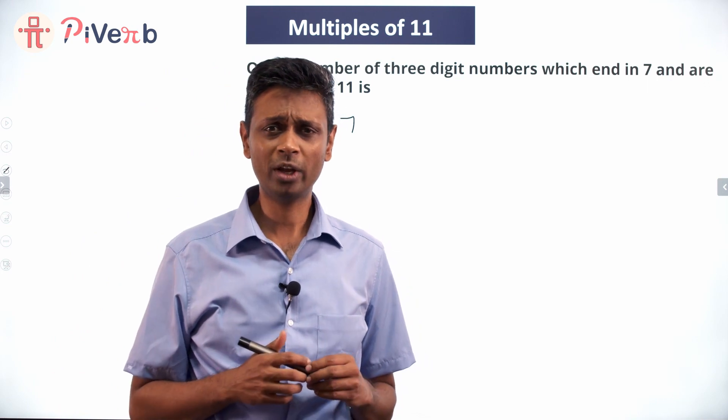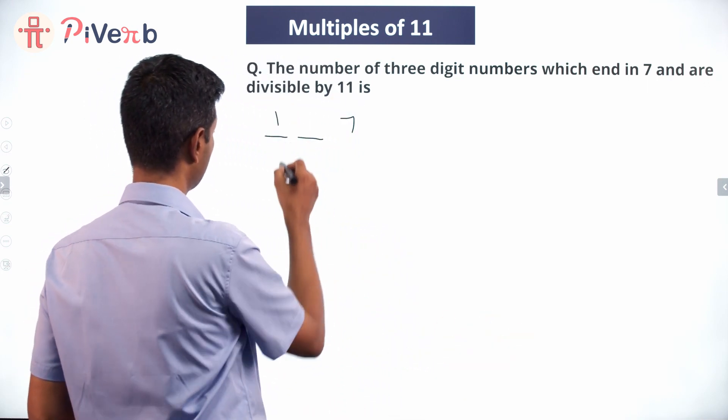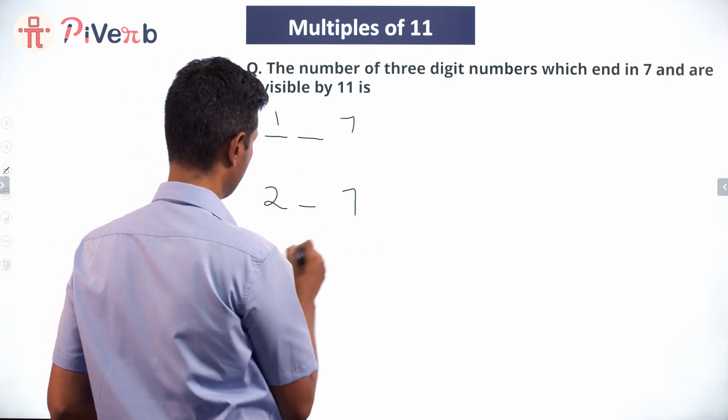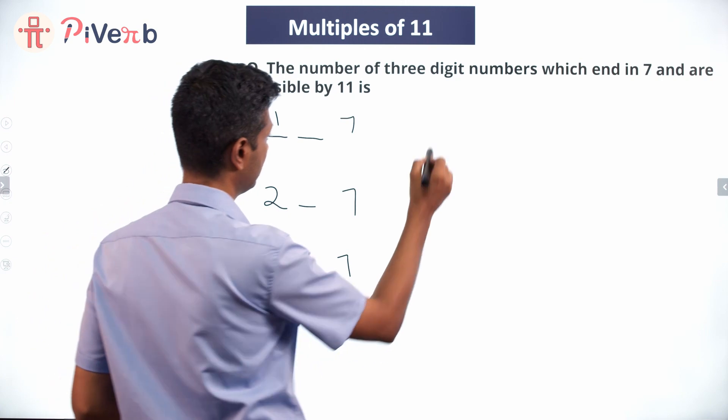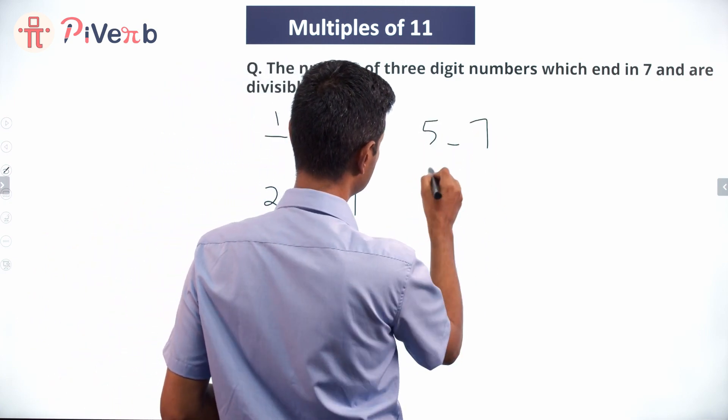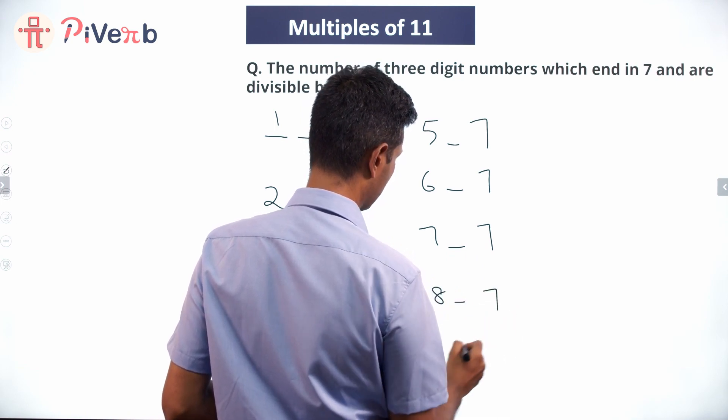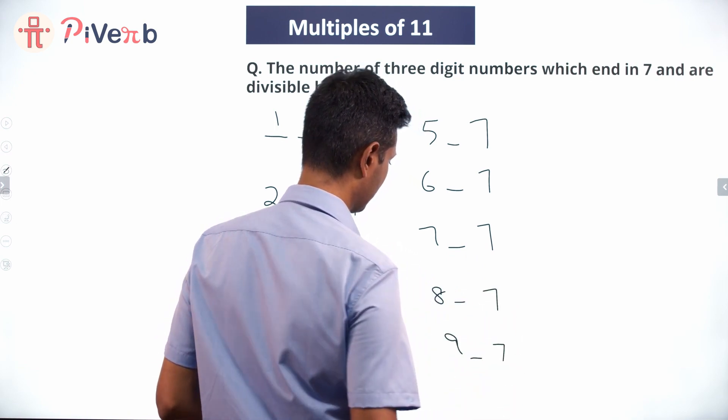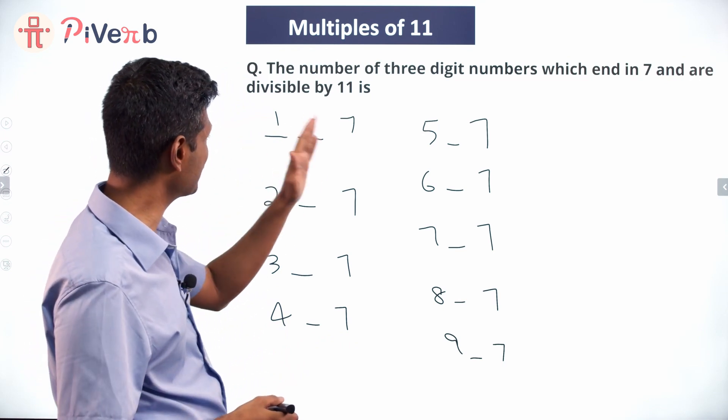Very simple question because I can put a pattern to it. What is the pattern I am thinking about? 1 dash 7, 2 dash 7, 3 dash 7, 4 dash 7, 5 dash 7, 6 dash 7, 7 dash 7, 8 dash 7, 9 dash 7. And then I will fill in the remaining number.